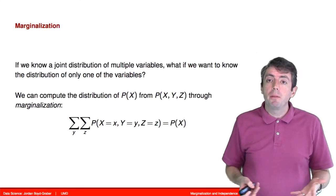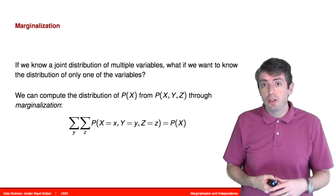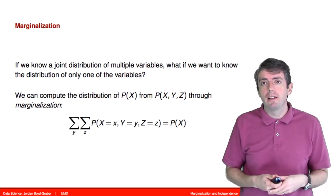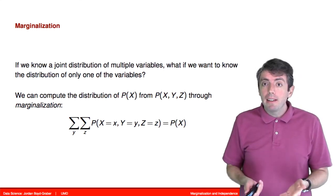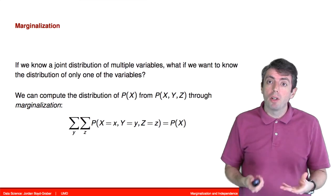So first off, sometimes you get a joint distribution, but you don't want a joint distribution. You care about a single random variable. If that's the case, you can use a process called marginalization.